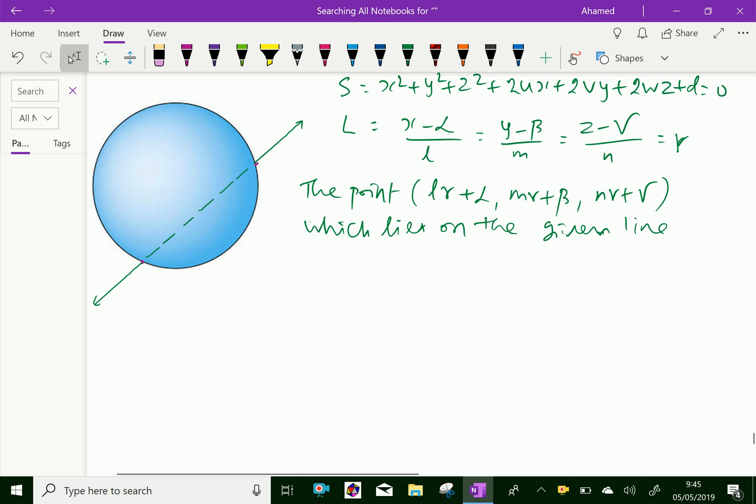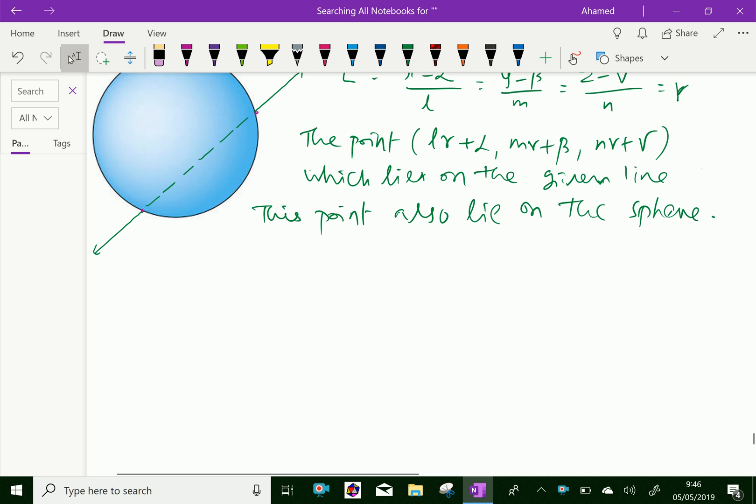Now, for all values of r, this point will also lie on the sphere, because this line and sphere intersect. Therefore, if r satisfies the equation...